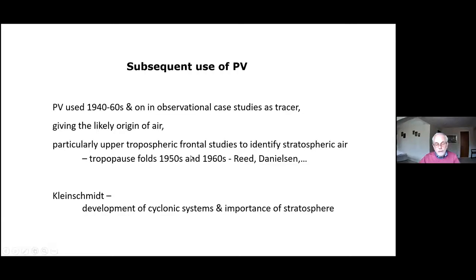If you saw large potential vorticity, you could say that air had probably come directly from the stratosphere — hence the idea of tropopause folds. The names Reed and Danielson were very much involved in this work. It was a particular interest at the time because of nuclear weapons testing: radioactive materials had been put into the stratosphere, and everyone hoped that was the last they'd see of them. But then suddenly, in certain regions — notably California — this radioactive material appeared low in the troposphere, generating great concern and driving the study of upper air fronts.